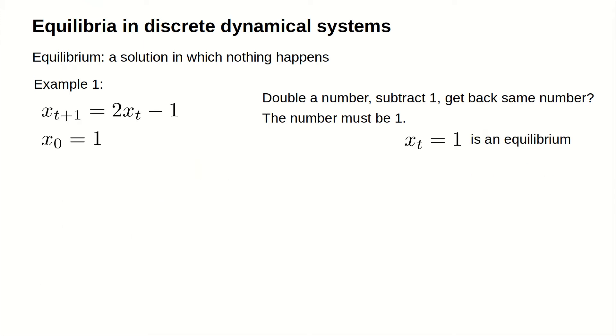We can show that x sub t equals 2 is not an equilibrium by trying the initial condition x sub 0 equals 2. If x sub 0 is 2, we'd calculate that x sub 1 is 3. If we start at 2, we don't stay at 2, so 2 is not an equilibrium.